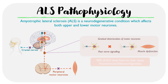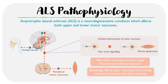Importantly, around 90% of cases of ALS have no clear cause, and the remaining 10% are hereditary ALS, which is mostly transmitted via an autosomal dominant inheritance pattern. This means that the child of someone with ALS has a 50% chance of inheriting the gene from a parent.